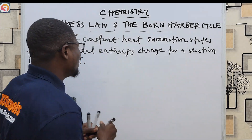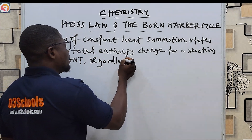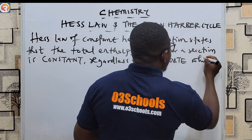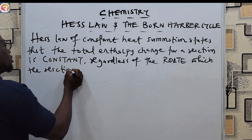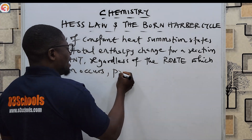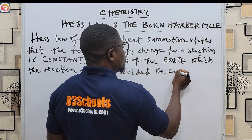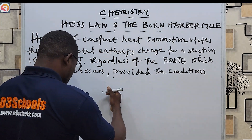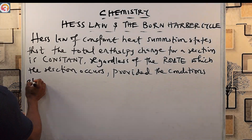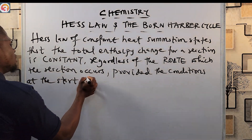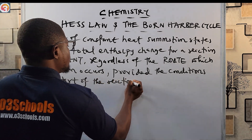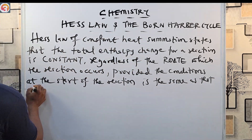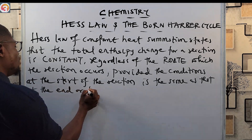Hess's Law states that the total enthalpy change for a reaction is constant regardless of the route which the reaction takes, provided the conditions at the start of the reaction are the same as those at the end or final condition.